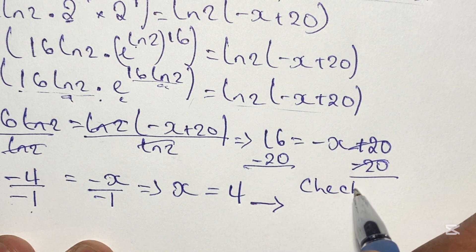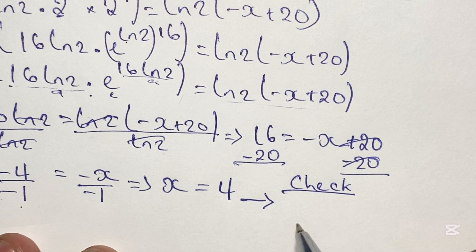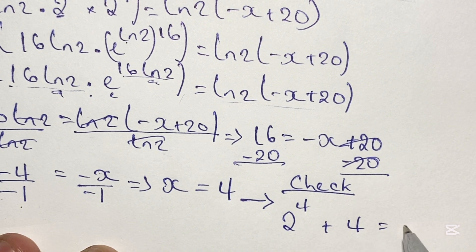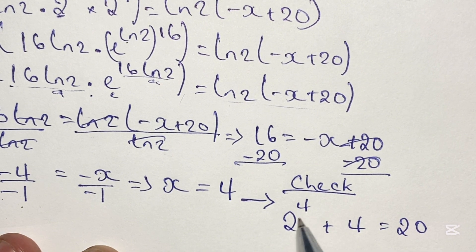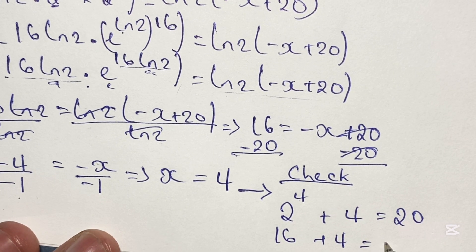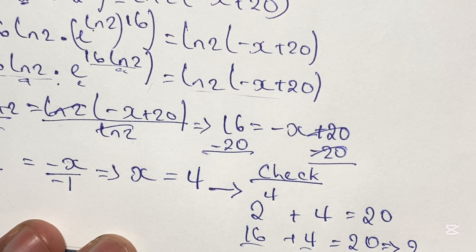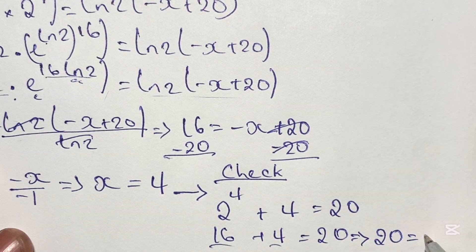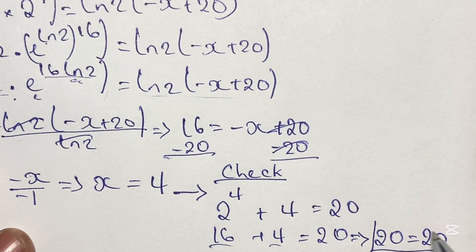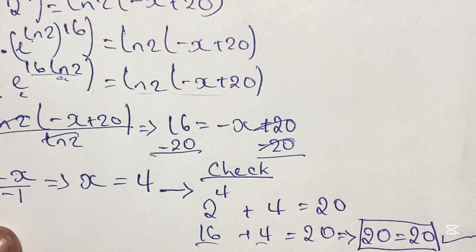Now we check our solution by plugging in the value of x into our original equation. We have 2 to the power of 4 plus 4 equals 20. Since 2 to the power of 4 gives us 16, we have 16 plus 4 equals 20, which is true. So as was said at the beginning of this video, x is equal to 4, and here we have shown the actual working that x is indeed equal to 4.